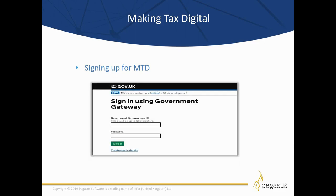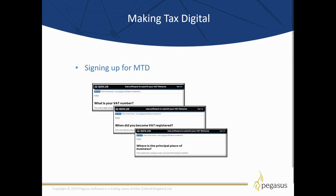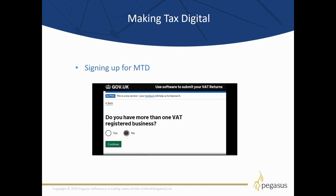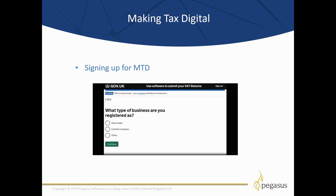Now you need to log into the Government Gateway using your existing Government Gateway user ID and password — this is what you use to submit your VAT returns online. If you don't normally use Government Gateway credentials to submit VAT returns to HMRC, you'll be asked for additional information such as your VAT registration number, VAT registration date, and business postcode so they can identify the relevant company signing up for Making Tax Digital. You'll then be asked 'do you have more than one VAT registered business?' If you do, you'll be asked more questions to ensure business details and VAT registration numbers match. You'll also be asked what type of company you are registered as: sole trader, limited company, or other.